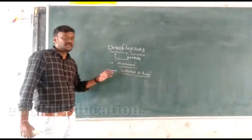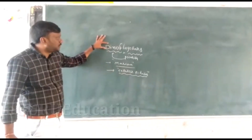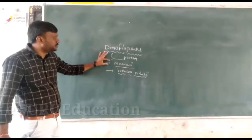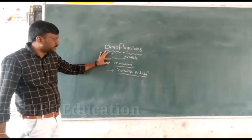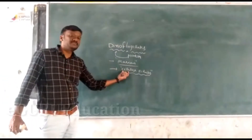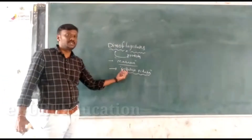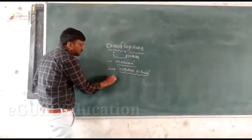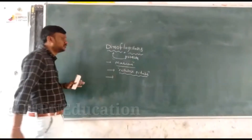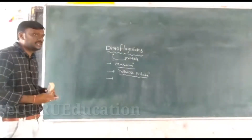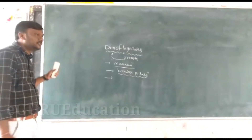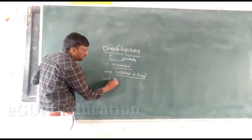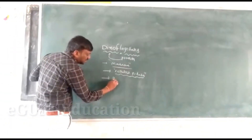So we clearly understand: dinoflagellates are living in marine water, the cell wall is made up of cellulose plates. Compare the chrysophytes — chrysophytes cell wall is made up of silica, but dinoflagellates cell wall is cellulose plates. These dinoflagellates move from one area to another area for food or habitat.